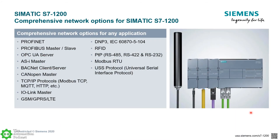This summarizes all the different protocols available on the 1200, either via the integrated PROFINET port or through expansion communications cards. It covers most major protocols on the market today: PROFINET, PROFIBUS, OPC UA server, IO-Link, BACnet, CAN, TCP/IP protocols such as Modbus, HTTP, MQTT, cellular, DNP3 for RTU-type applications and timestamping, and RFID. There's basically a lot of flexibility for any small to mid-size application.